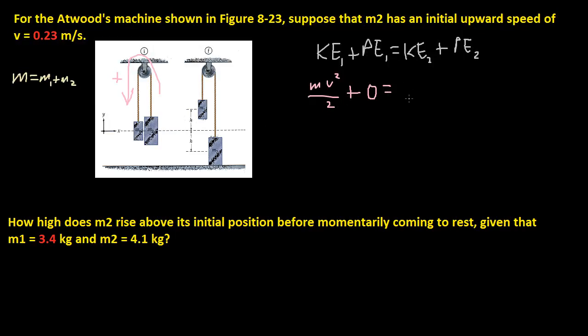Okay, how about when we end? Well, it's going to be 0, right? Because it says it momentarily comes to rest, so kinetic energy 2 is going to be 0. And then potential energy 2, well, M2 rises upward over the horizon, right? But M1 goes down, because it goes down, and it's negative. And we can say that even though this is positive, because gravity acts this way for all of them.